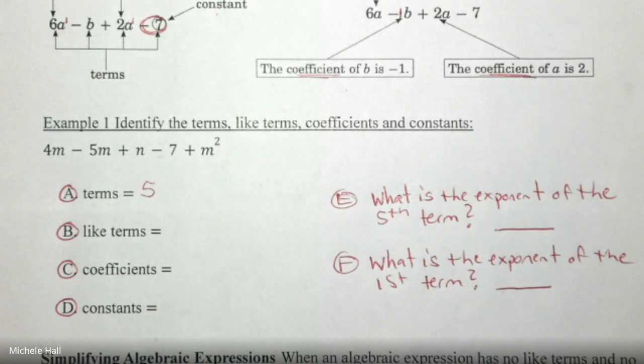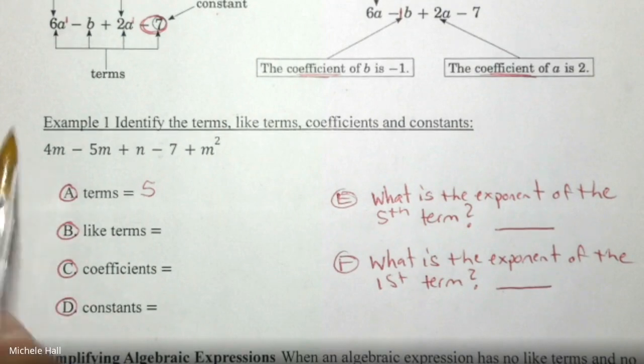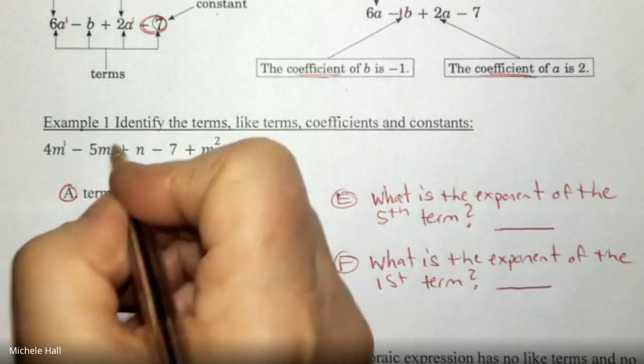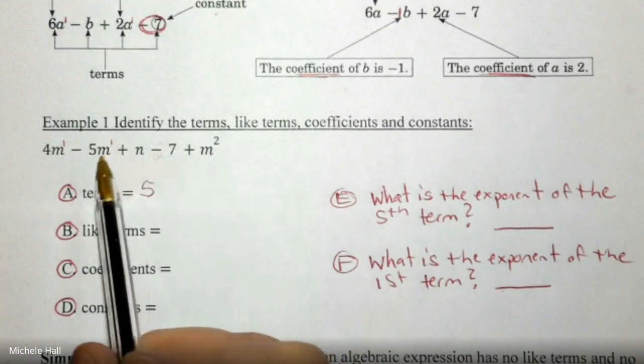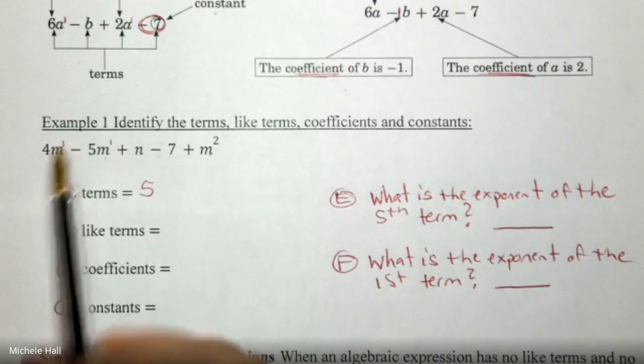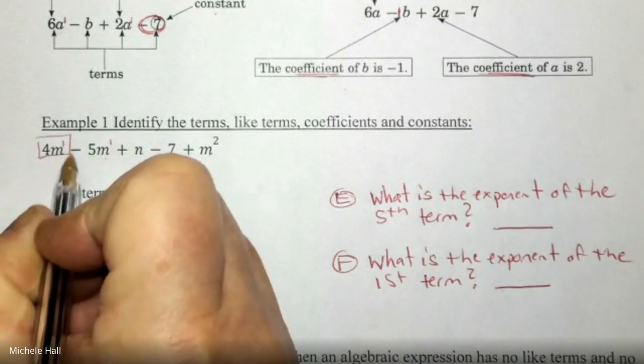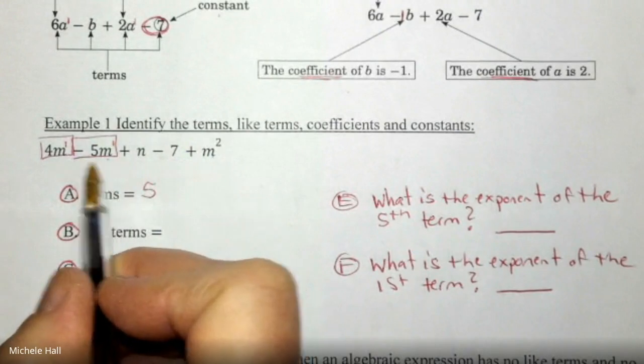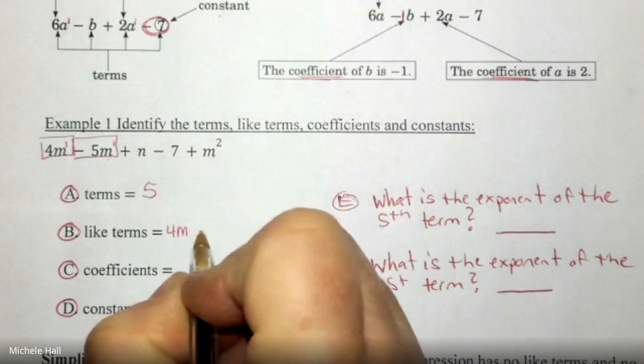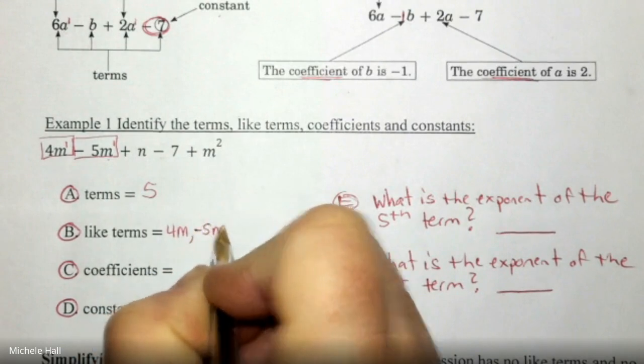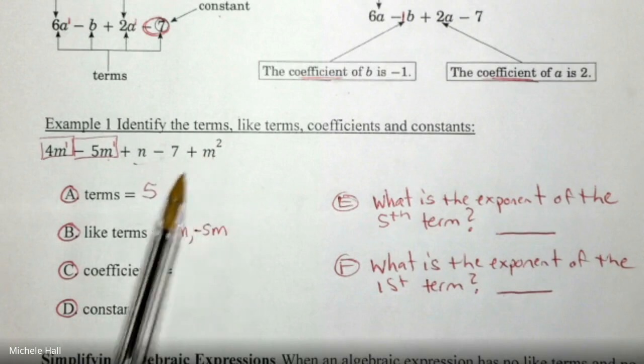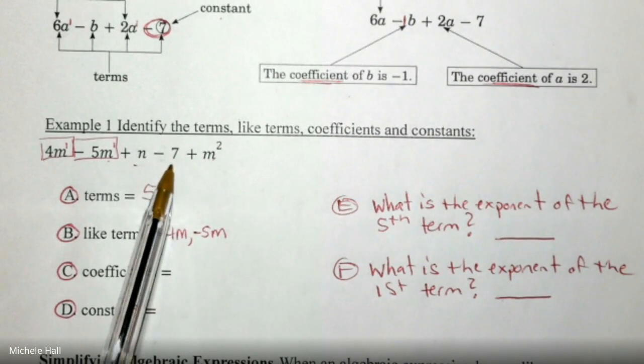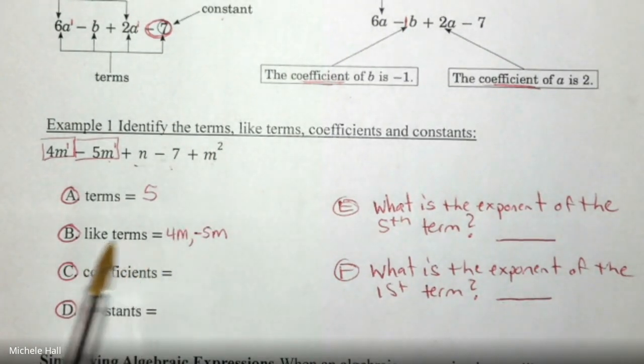How many of those five terms are like terms? Which ones could I combine together? They are like terms. I have an m. Are there any other m's to the one power? I see there's another m to the one power. I see m squared, m to the second power. That is not a like term with m to the one power. Remember they have to have exactly the same variable and exponent. And I see here that 4m and negative 5m, those are like terms. Do we have any other terms that we can combine together? I have an n term, but I don't have any more n's. I have negative seven, but I don't have any other numbers I could combine with that. And there are no other m squared terms. So these are the only like terms that I could simplify.